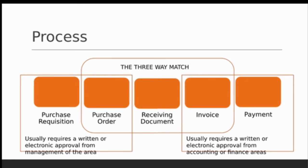This whole process can differ across entities. Some may not have a purchase requisition and start directly with a purchase order. Some smaller companies may not even have a purchase order system — they may just order things, receive an invoice, and pay it, so it's just those last two steps. It depends on the entity, how big they are, and what type of system they have.